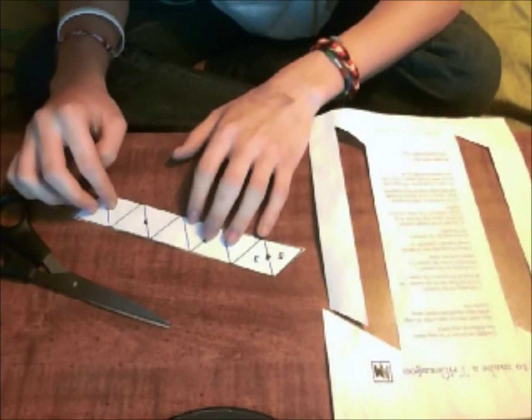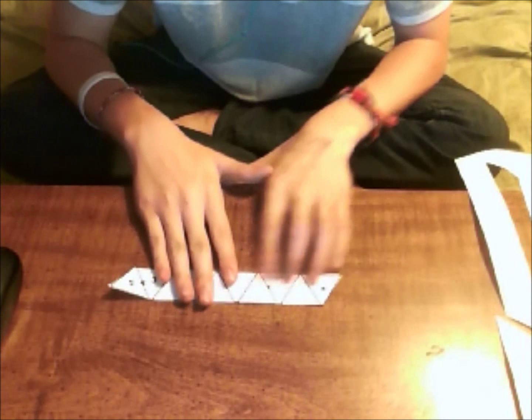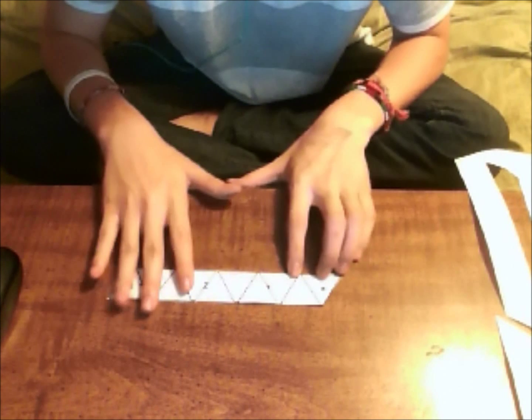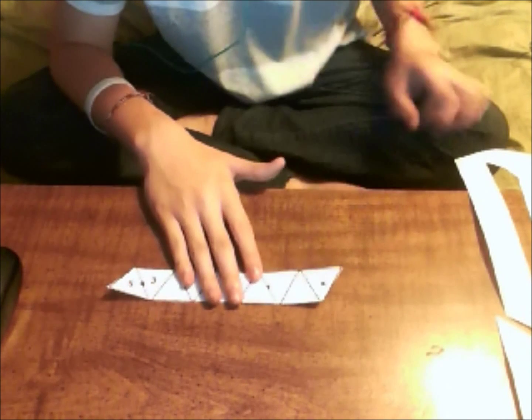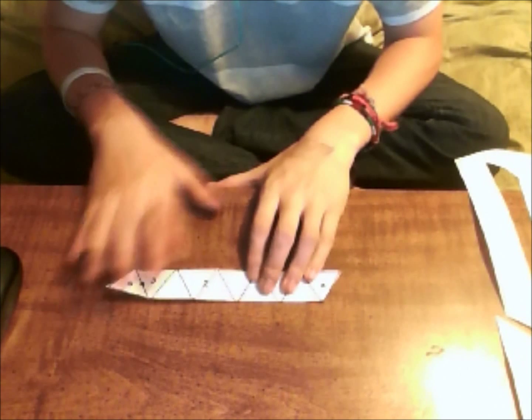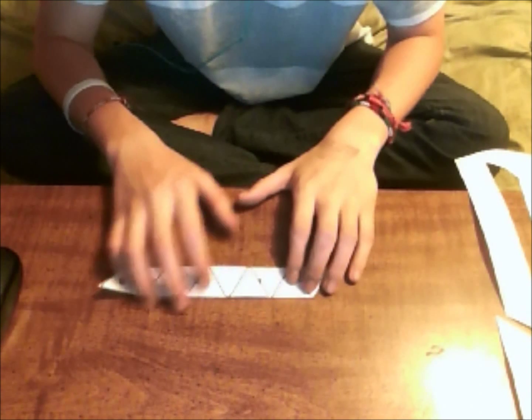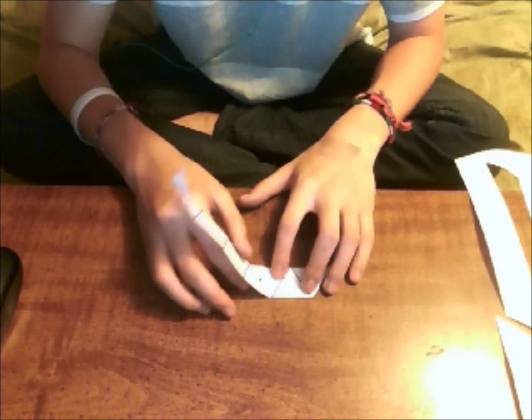First what you want to do is have the X point facing you and the number 5 point facing outwards. What you want to do first is fold where the 1 is at.